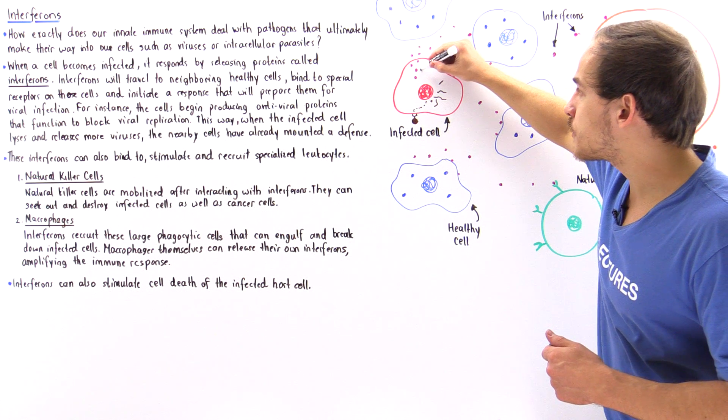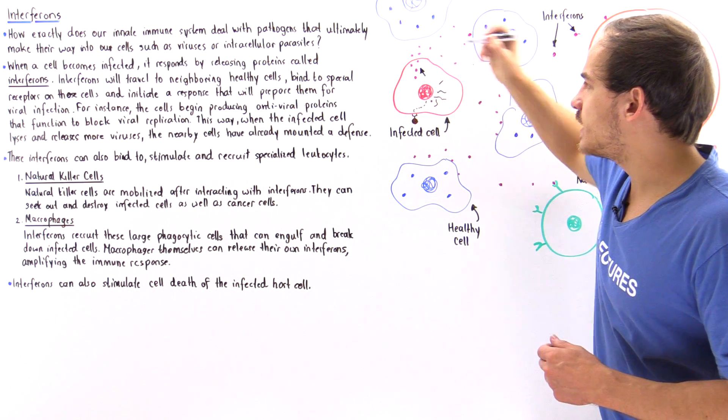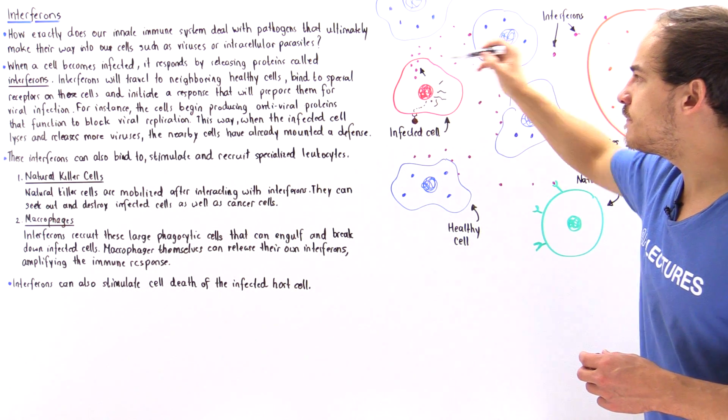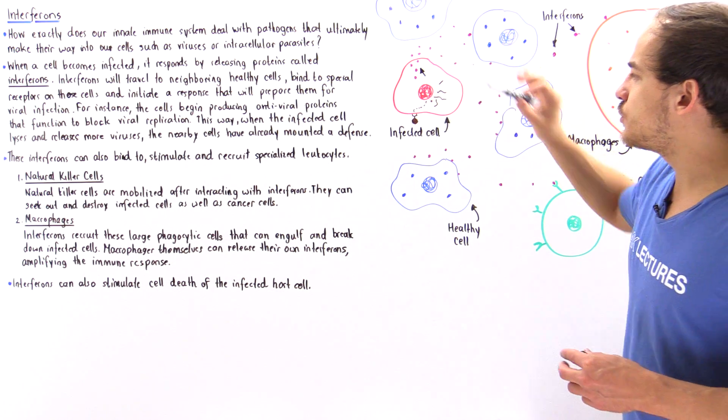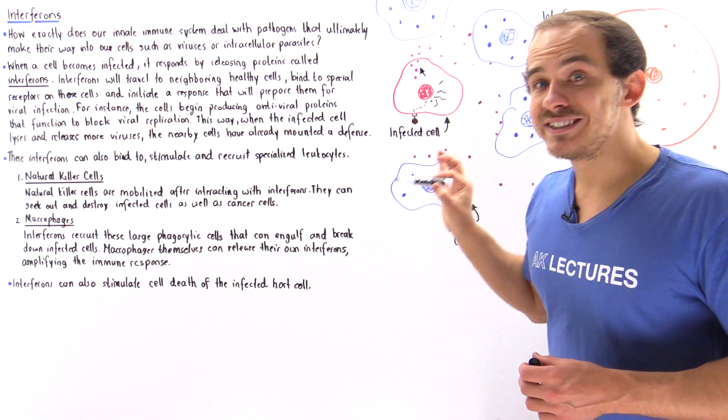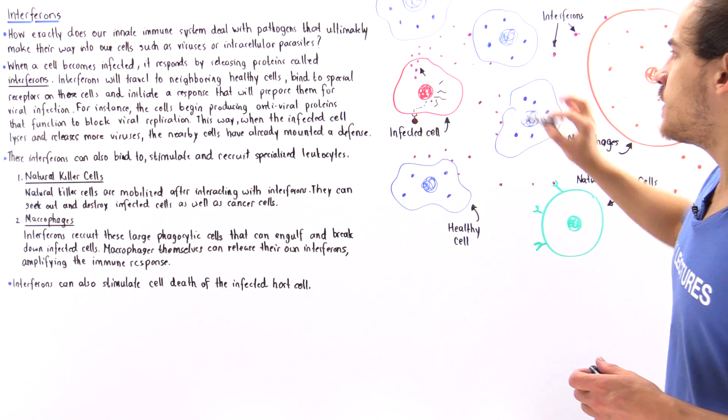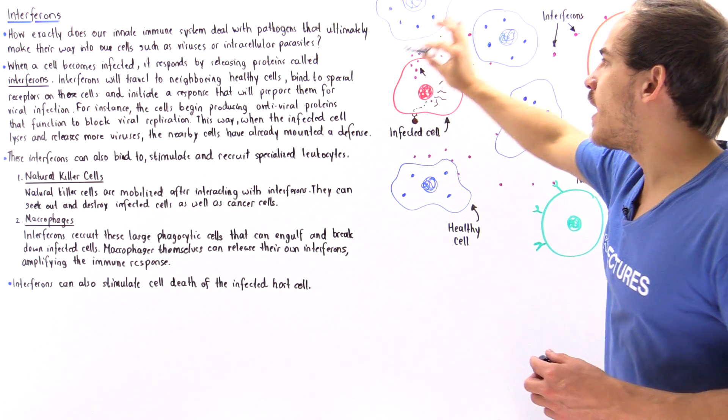So these purple molecules here are the interferon. So the infected cell begins to produce these interferons and the cell releases these interferons to the surrounding environment.